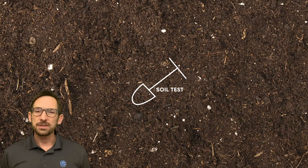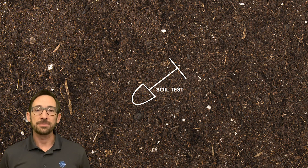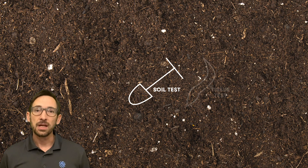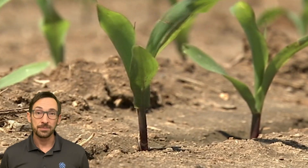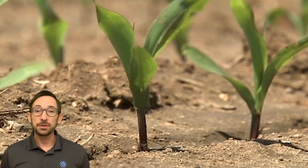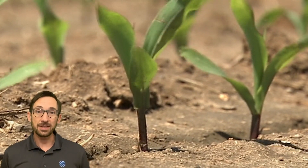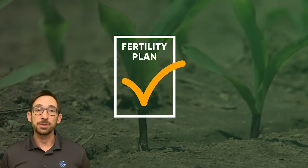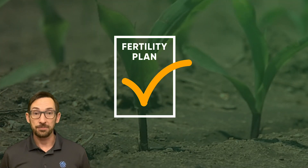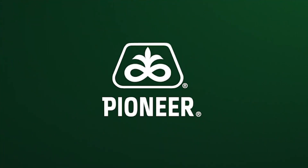Soil tests can vary in their reliability in assessing micronutrient availability. So pairing a soil test with a plant tissue test is often the best bet. Once you've determined that a micronutrient deficiency exists, you can develop a fertility plan to address it. Check out the link for more details.